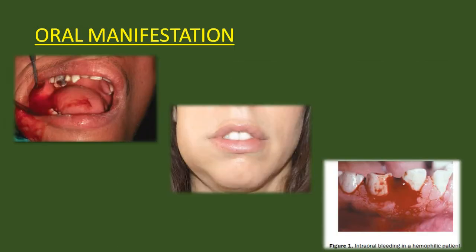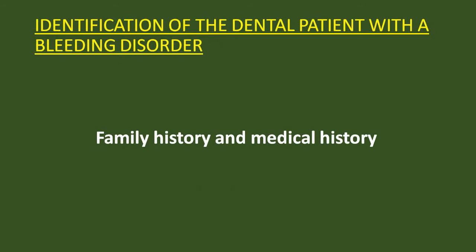Oral manifestations include gum bleeding — spontaneous gum bleeding or bleeding after trauma or after block injections. For identification of the dental patient with a bleeding disorder, take a thorough family history to check if anyone suffered from hemophilia or other factor deficiency disease, and take the medical history of the patient, noting any spontaneous bleeding, bleeding after mild trauma, bleeding into joint spaces, or use of anti-platelet drugs like aspirin or clopidogrel, or anticoagulants like heparin or warfarin. History is very important.